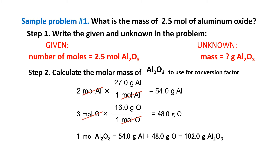Sample problem 1: What is the mass of 2.5 moles of aluminum oxide? Step 1, write the given and the unknown in the problem. The given is the number of moles of aluminum oxide — 2.5 moles of aluminum oxide. The unknown is the mass in grams of aluminum oxide.